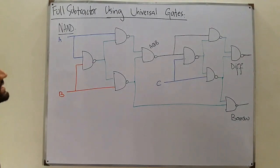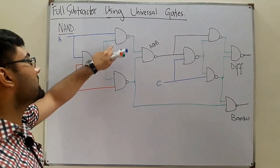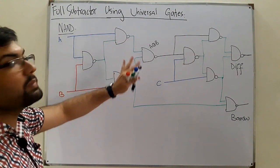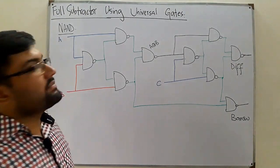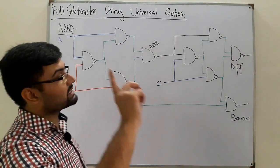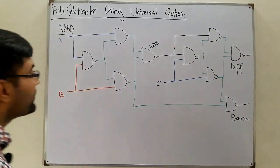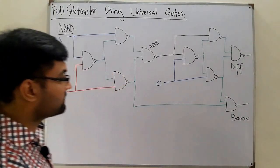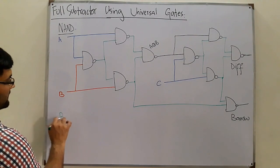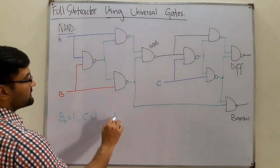To verify the circuit, rather than proving it algebraically — which gets complex — we use specific input values as we did with full subtractors before. Let's take A=1, B=1, C=1. In this case, the borrow should be 1 and the difference should also be 1.